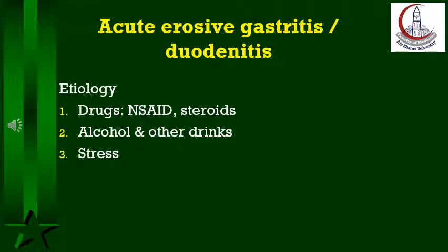Alcohol in particular, as well as too much coffee or other drinks, might induce acute erosions. Stress ulcers have already been mentioned, and their incidence was found to be reduced by proton pump inhibitors, also known as PPI, which are usually given to the severely ill for this reason.